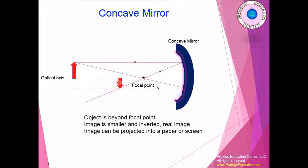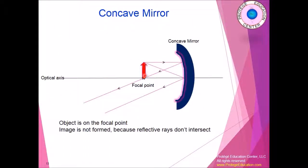The image formed will be smaller in size and also inverted — the top becomes the bottom and vice versa. The image forms where two or more reflected rays intersect. With a concave mirror, the image actually forms in front of the mirror, so you can use it to project images onto a paper or screen. However, if the object is exactly on the focal point, the two reflected rays will be parallel and will never meet, so no image will form.